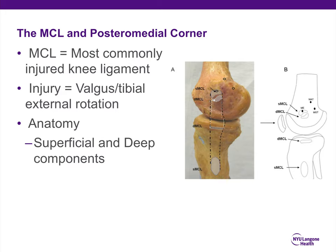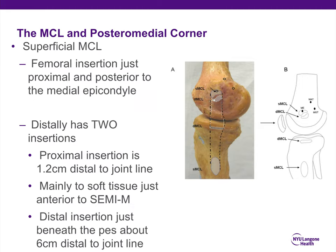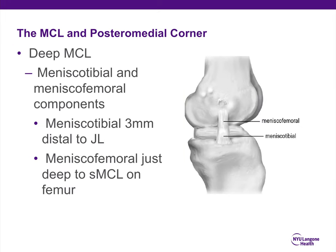Now we move on to the MCL and the posteromedial corner. The MCL is the most commonly injured knee ligament, more common than ACL, PCL, or LCL injuries. The injury mechanism is typically valgus and sometimes external rotation of the tibia. The MCL has superficial and deep components. The femoral insertion of the superficial MCL is just proximal and posterior to the medial epicondyle. Distally, the superficial MCL has two insertions: one proximally about 1.2 centimeters distal to the joint line, and the distal insertion just beneath the pes anserine about 6 centimeters distal to the joint line. The deep MCL is composed of a meniscofemoral and a meniscotibial component, with the meniscotibial inserting about 3 millimeters distal to the joint line.